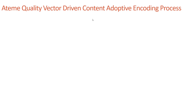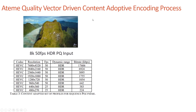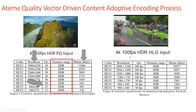ATEN uses that metric to make encoding ladder decisions. For an 8K 50fps file with HDR PQ input, the encoding ladder ranged from 4K to 270p and 17 megabits per second down to 224 kilobits per second. The metric indicated where to switch from 25 to 50 frames per second and that HDR made sense for all rungs. For a 4K 100fps HDR HLG input, it similarly determined where to switch from 50 to 100 frames per second and from SDR to HDR.